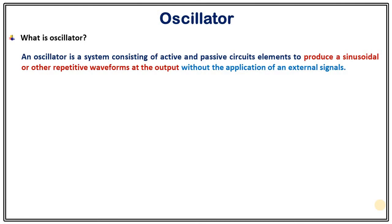An oscillator is a system consisting of active and passive circuit elements to produce a sinusoidal or other repetitive waveforms at output without the application of an external signal. What it means is that we don't have to apply any external signal at input in order to get repetitive waveform at output.